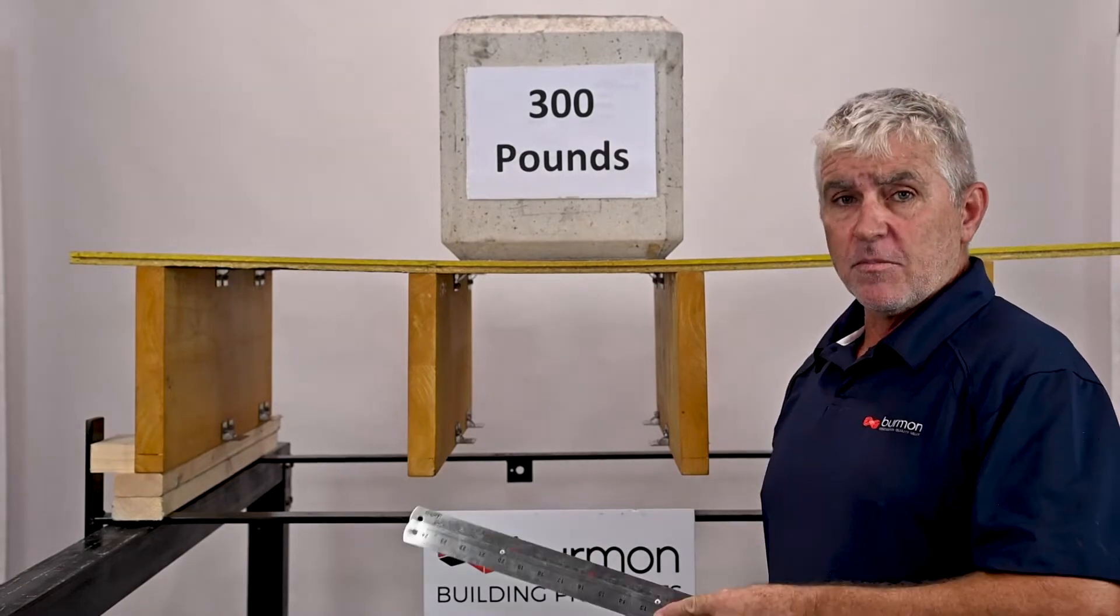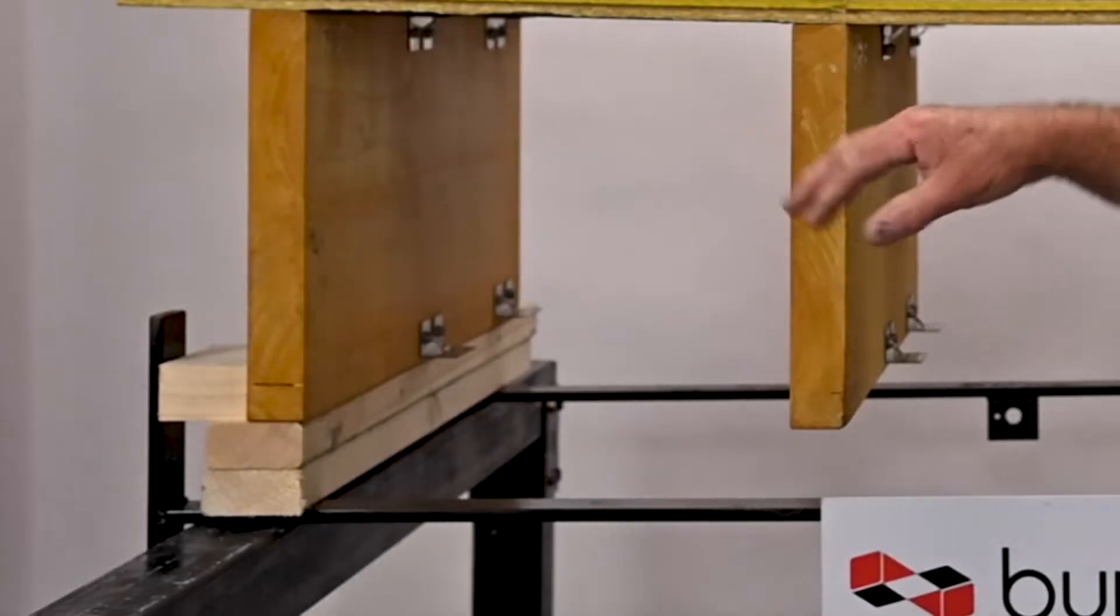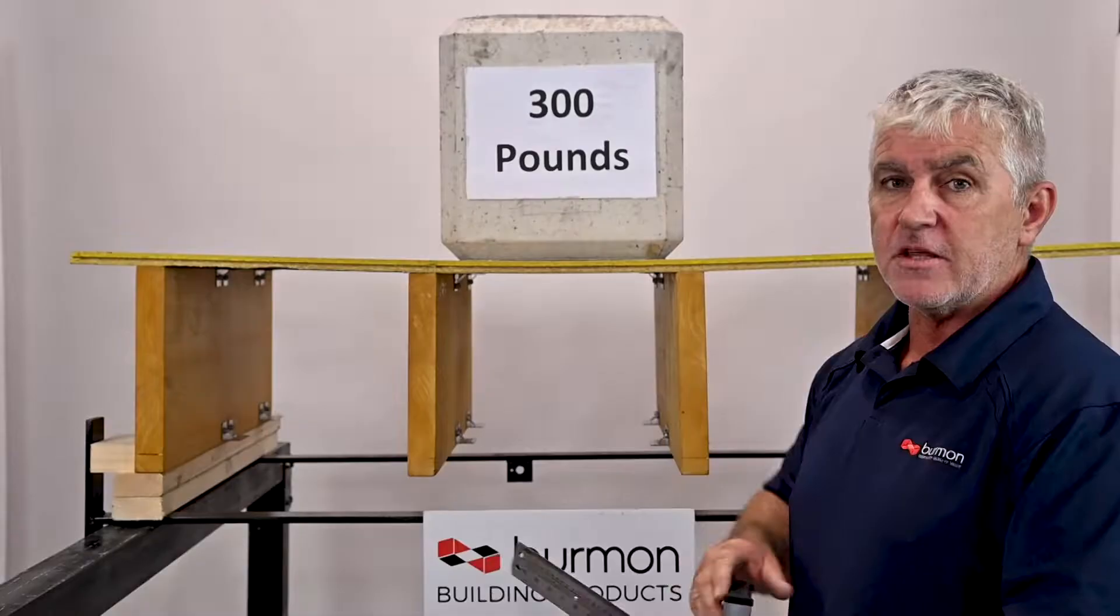This test is to show how floor lock performs. We have unsupported joists in the middle. They're supported on the ends so they don't bend out until they fall over.